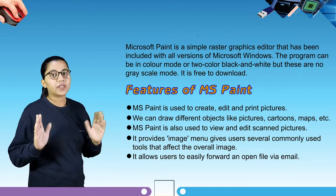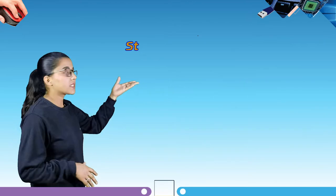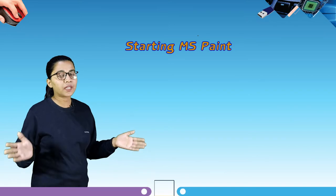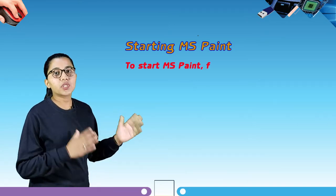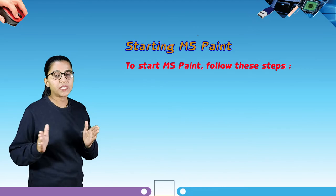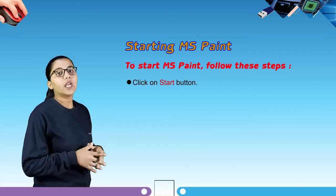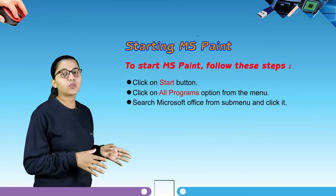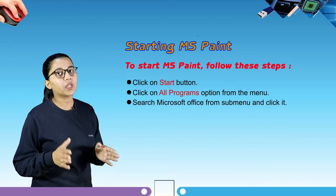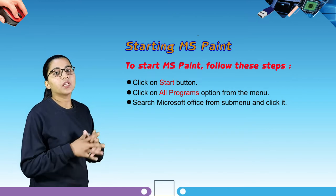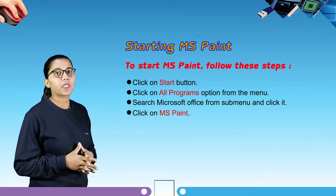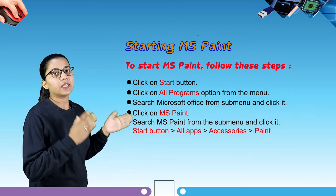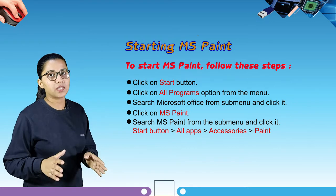Now let's jump to our next topic, that is starting MS Paint. To start MS Paint, follow these steps: click on start button, click on all programs option from the menu, search Microsoft Office from sub menu and click it, then click on MS Paint. Alternatively: Start button, then all apps, then accessories, then Paint.